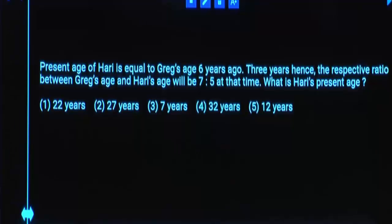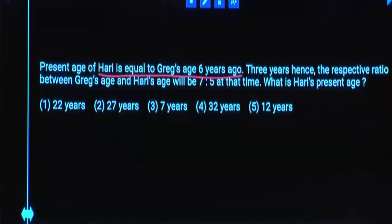Present age of Hari is equal to Greg's age 6 years ago. 3 years hence, Greg's age and Hari's age ratio will be 7 is to 5. What is Hari's present age? You are asked about Hari's present age. Hari's age is 6 years less than Greg. Greg's age is equal to Hari's age plus 6.